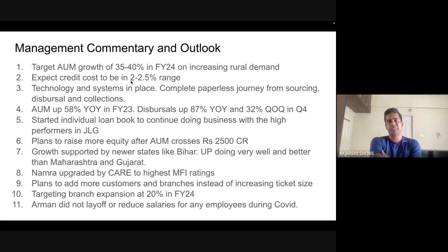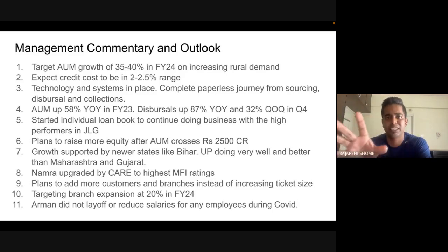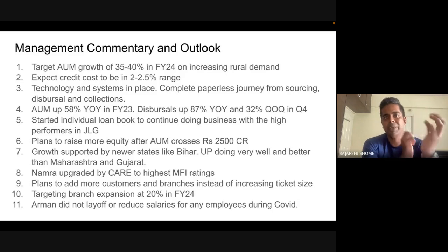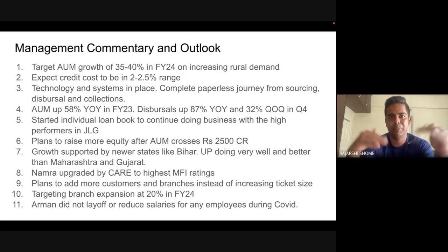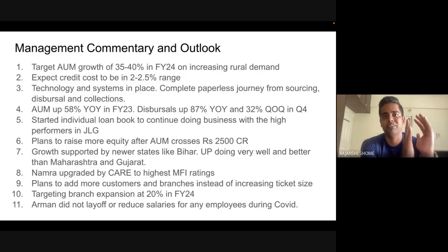Arman's management doesn't expect credit cost to be in the one percent range. When you're scaling up a microfinance business giving high-risk, low-ticket loans to many people, it's fine to have a credit cost of 2 to 3 percent. HDFC Bank's credit cost is below 1 percent because it deals with customers giving 12 to 13 percent yield. Arman gives loans at 30 to 35 percent yield — so defaults will be more, but they also make more per borrower. It balances out at the end.